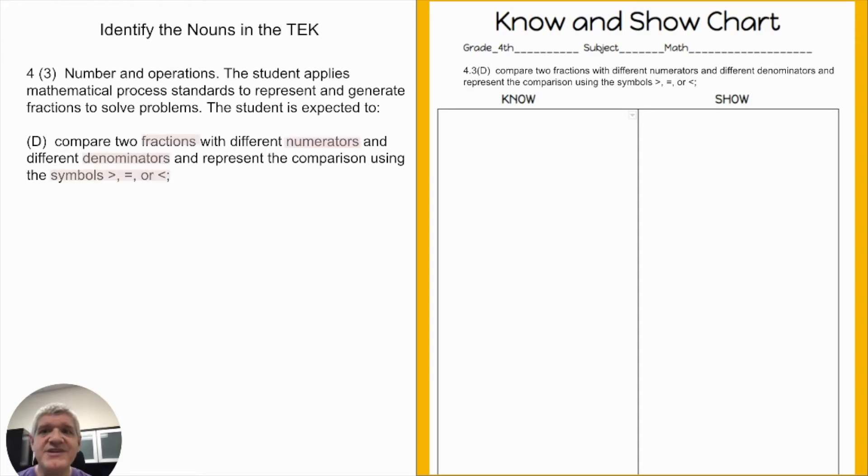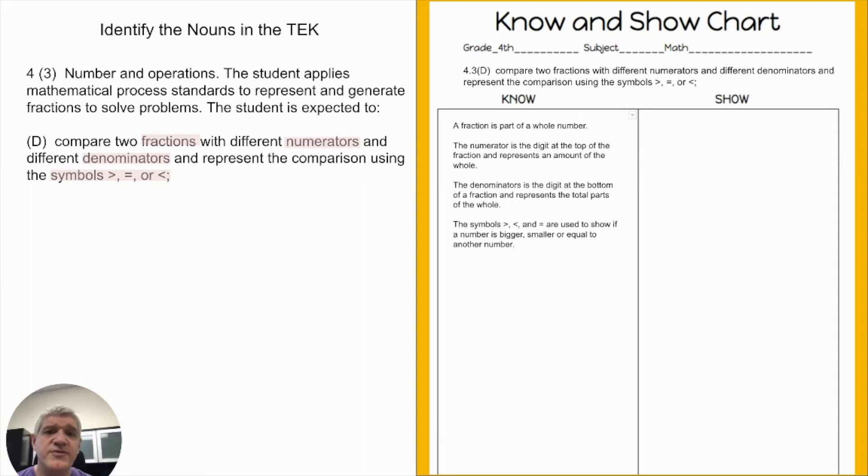Now I'm going to take a look at the nouns, and the nouns are going to help me figure out what the students need to know. From this: fraction, numerator, denominator, and the symbols. I know that a fraction, the students need to know, is part of a whole. They need to know that the top digit is the numerator, the bottom digit is the denominator, represents the whole. They also need to know those symbols and what they mean—bigger, smaller, equal.